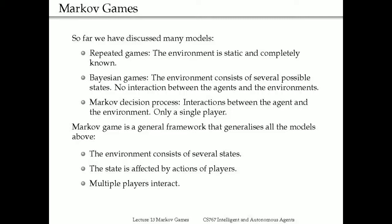A Bayesian game is essentially a static game. And thirdly, we looked at in the last lecture the Markov decision process, where we can have an agent engaging in more complex forms of interaction with the environment. That model allows us to complete the loop so that factors in the environment determine the game setup, which influences the decision making of the agent, and then the agent makes actions that in return change the state of the environment. This interacting cycle between agent and environment is what we really want to capture in artificial intelligence.